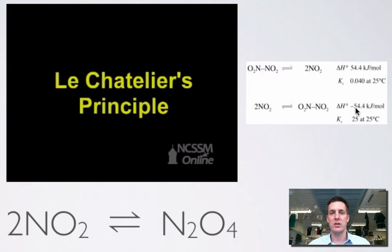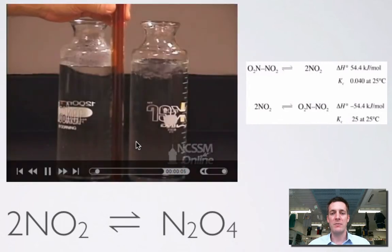We're told about the enthalpy change for that process, and it should be no surprise to see that it's the same energy change, just changed sign. Here the enthalpy change is minus 54.4 kilojoules per mole, so that tells us this forward reaction must be exothermic. It gets hotter, and that should be giving us some idea about what this system is going to try to do as we make it get hotter or colder according to Le Chatelier's principle.